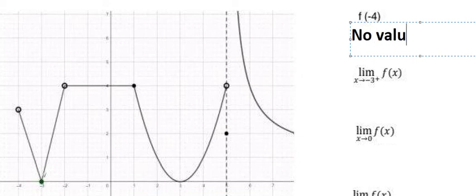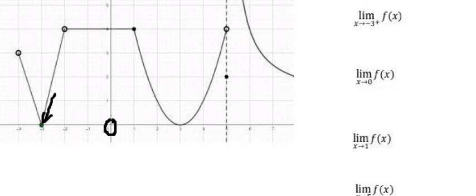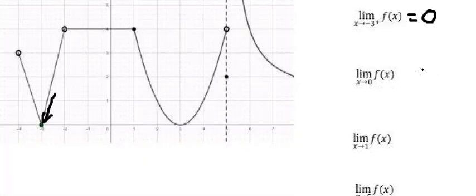Question B: s approaches negative three on the right. We have negative three — if we go on the right, we go from here to here, and we can see that this is about number zero. So the value of this limit equals zero: when s approaches negative three on the right, s approaches number zero.